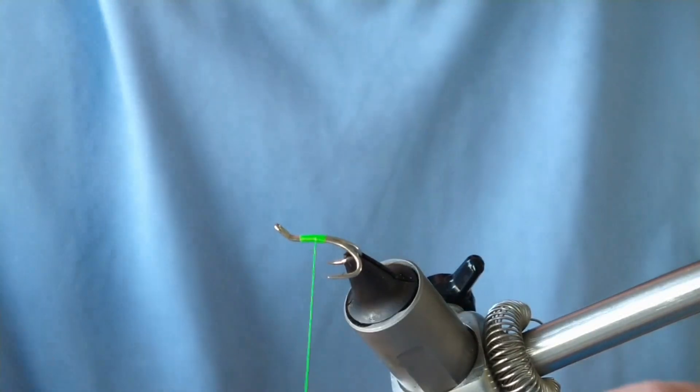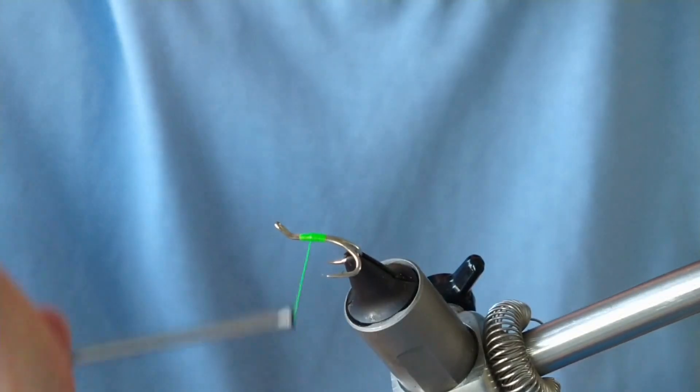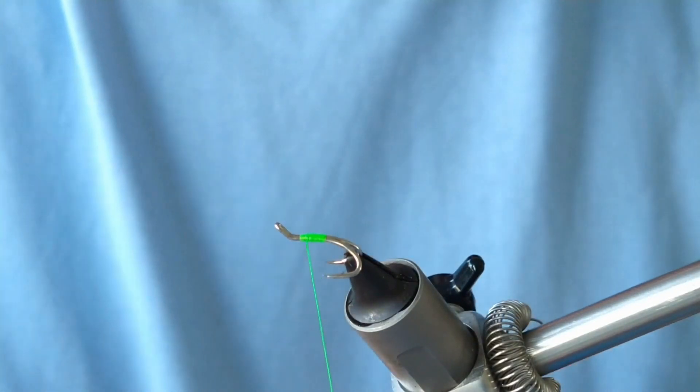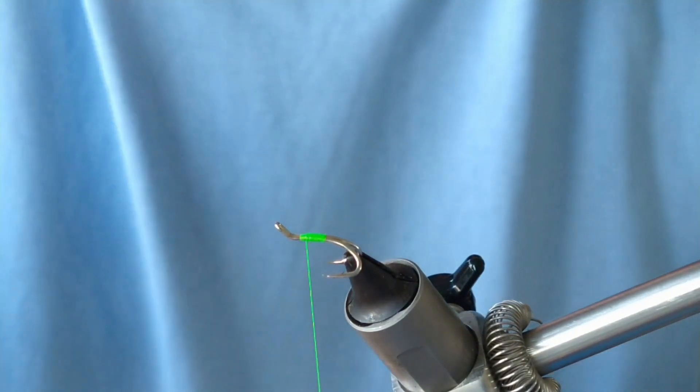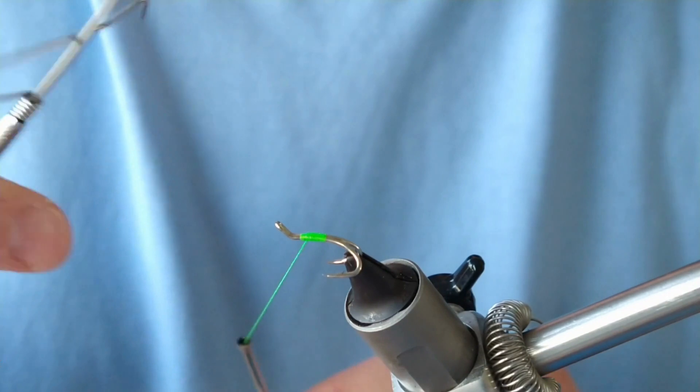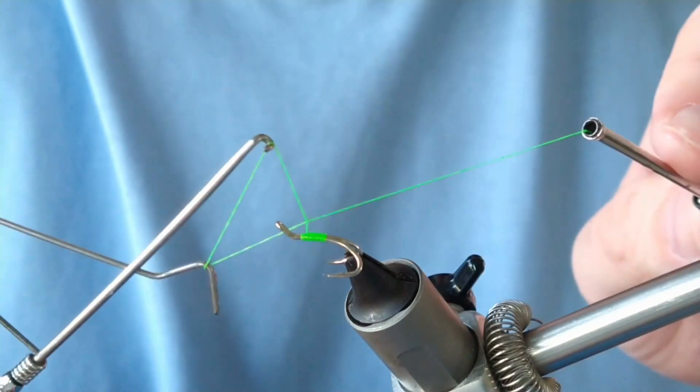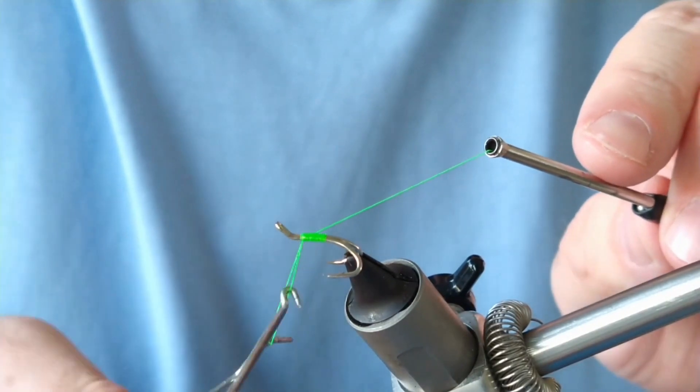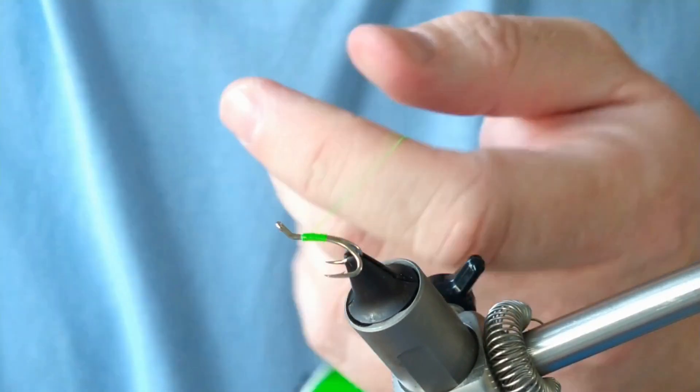The body's made up of fluorescent green floss, size 12. You can use any floss yourself, you can even use fluorescent green thread. I've just run two runs up the body there, and then I'm going to do a wee whip finish.